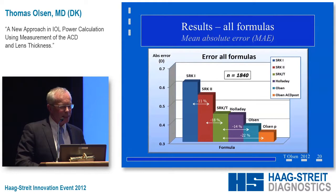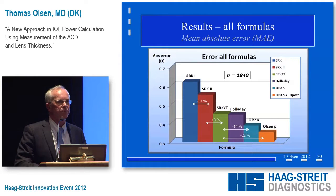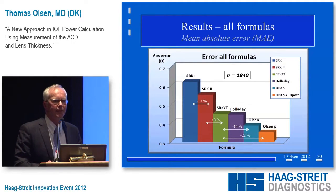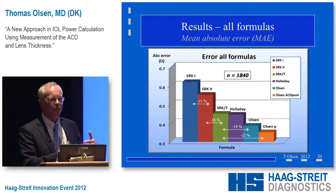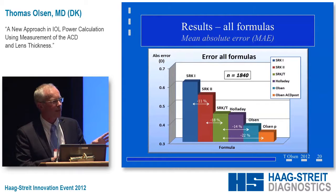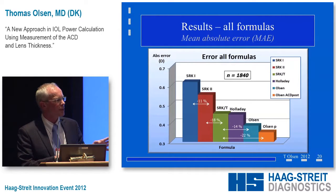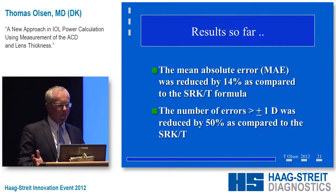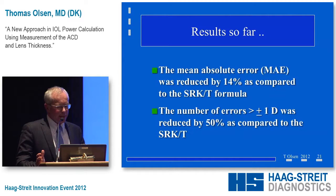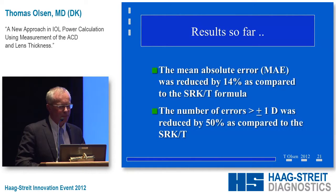Taking the mean absolute error, you can see a stepwise increase in accuracy going from SRK1 to SRK2 to SRKT to Holladay, and then there's a 14% drop in mean absolute error with our approach. Additionally, using information from the fellow eye — if the first eye has a certain refractive error and I measure the IOL position, I use this for the second eye — I get even higher accuracy. In this series, the number of errors more than one diopter was reduced by 50%.